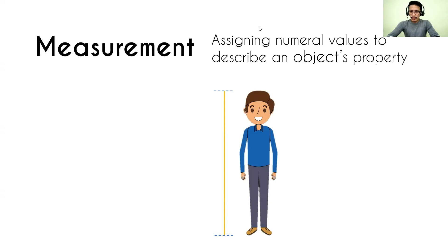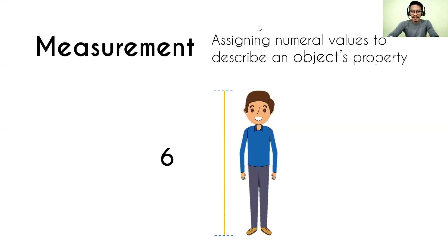For example, we are going to describe the height of a person. We could say 'tall' or 'short,' but that is not how physics describes things. If we just say the height is '6,' that number has no meaning — it could be 6 pencils, 6 pointers, anything. It would make sense only if we put a point of reference, for example, '6 feet.' That way, we know the height is being compared to a foot.